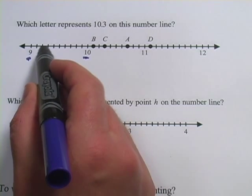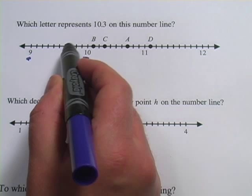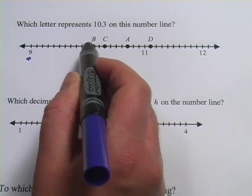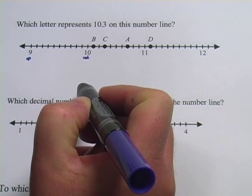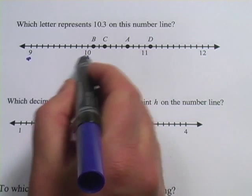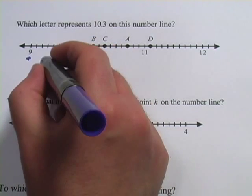So let's count these. I've got 1, 2, 3, 4, 5, 6, 7, 8, 9, 10. Brings me all the way up to 10. So there are 10 in one space here. So these are tenths.